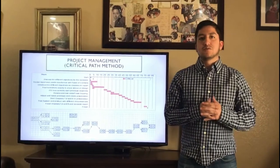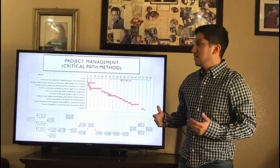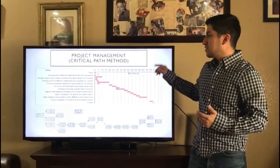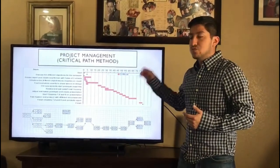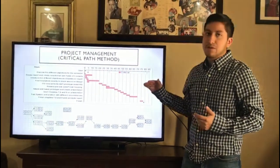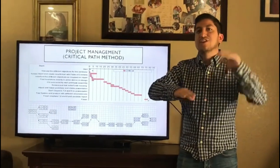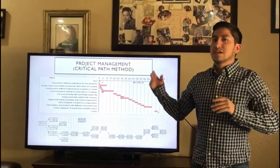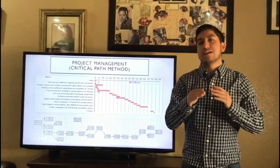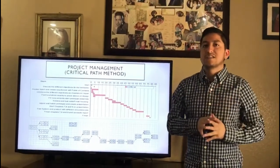In our critical path method, we mapped out the critical path that we have to take. The reason why these are all in red is because they're all critical, and in order for us to make the other ones, we have to follow each step. After we finish this activity, we have to go to the next. There are some that start at the same time because they don't have the same predecessors.